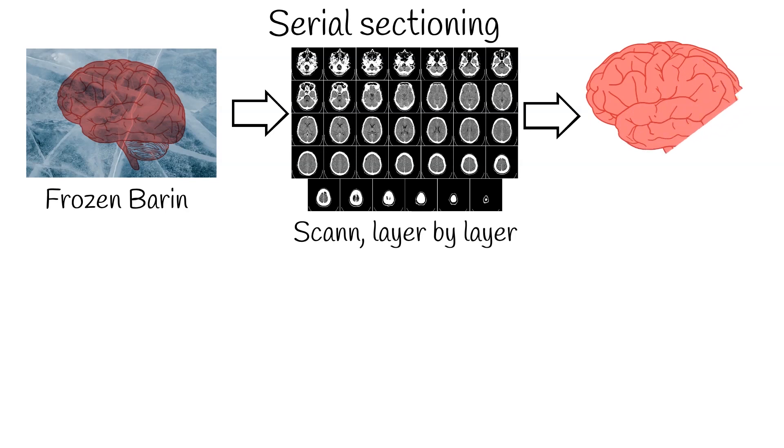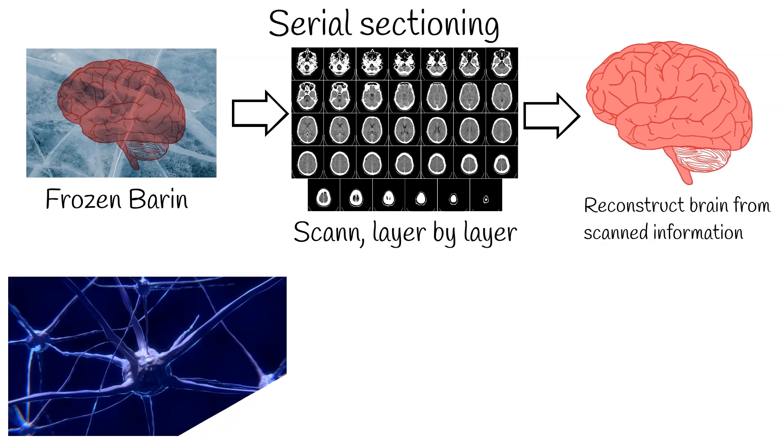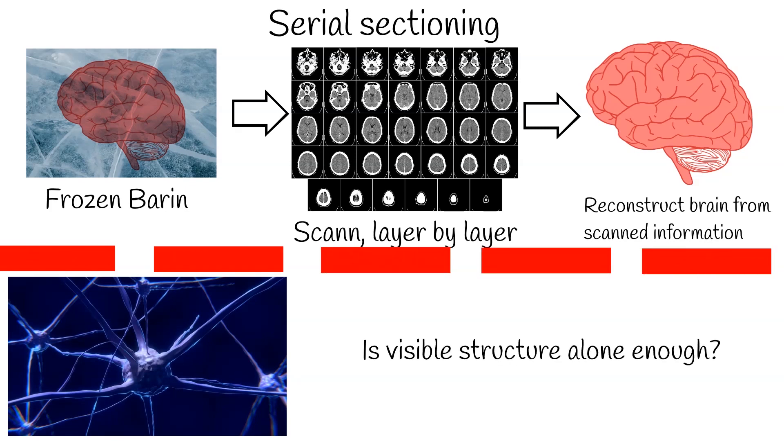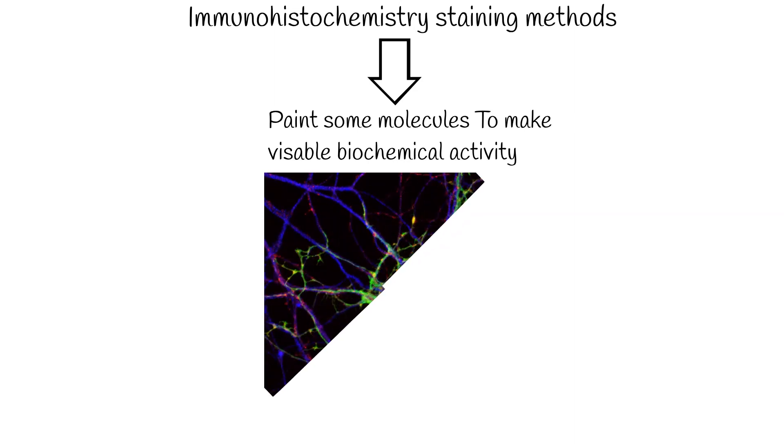Main problem here is, it is unknown if it is possible to replicate neuron function from its visible structure alone. Because function of brain tissue is partially determined by molecular events. Solution to this problem is to use sophisticated immunohistochemistry staining methods. Then could be read via confocal laser scanning microscopy.